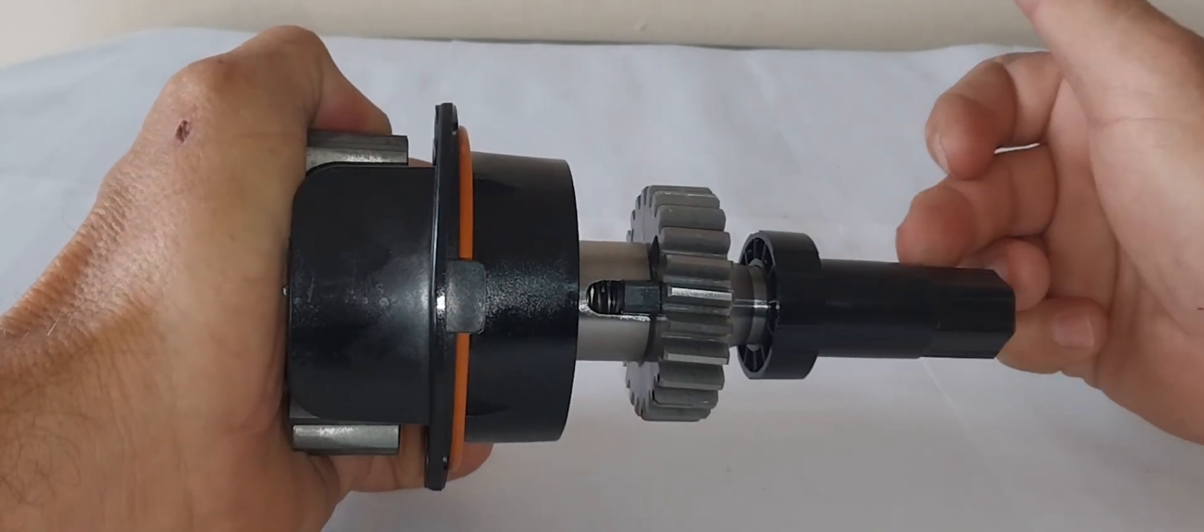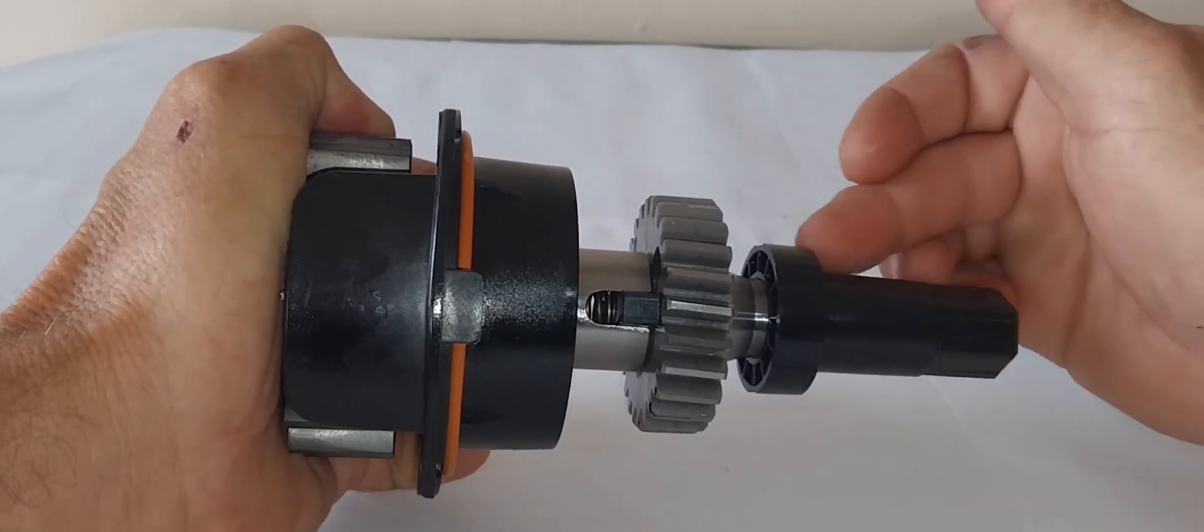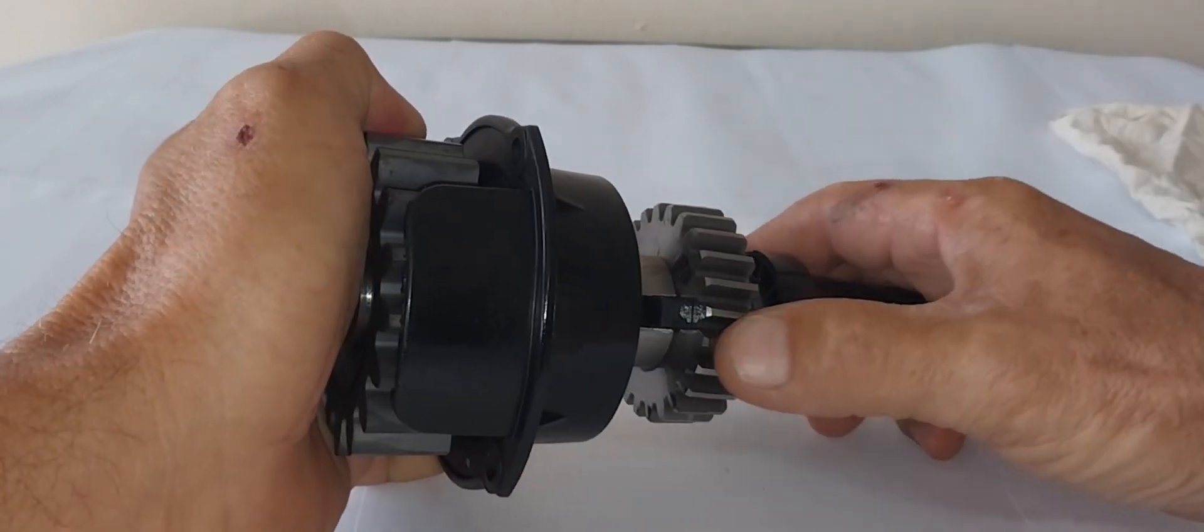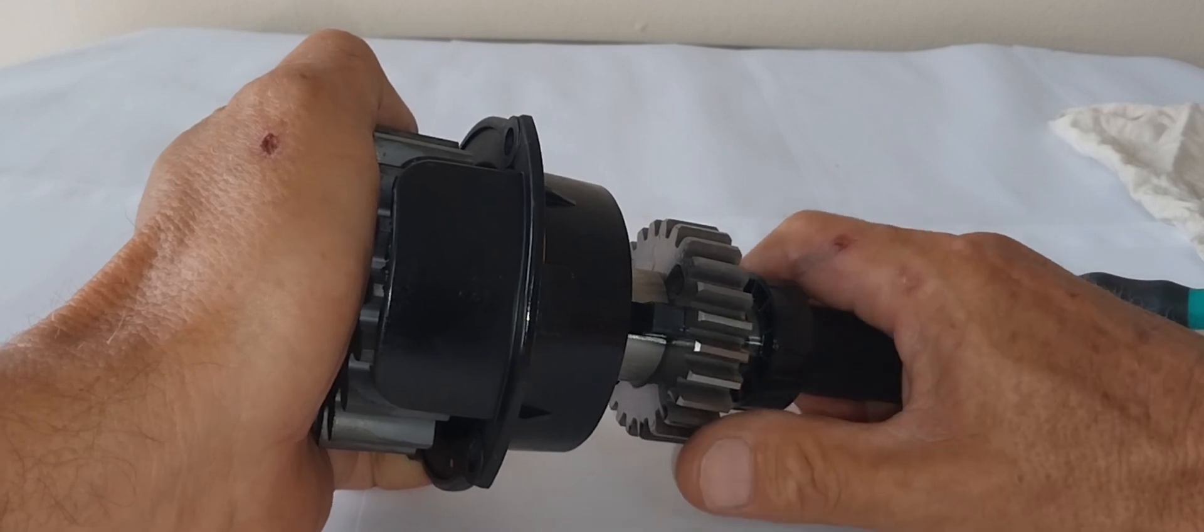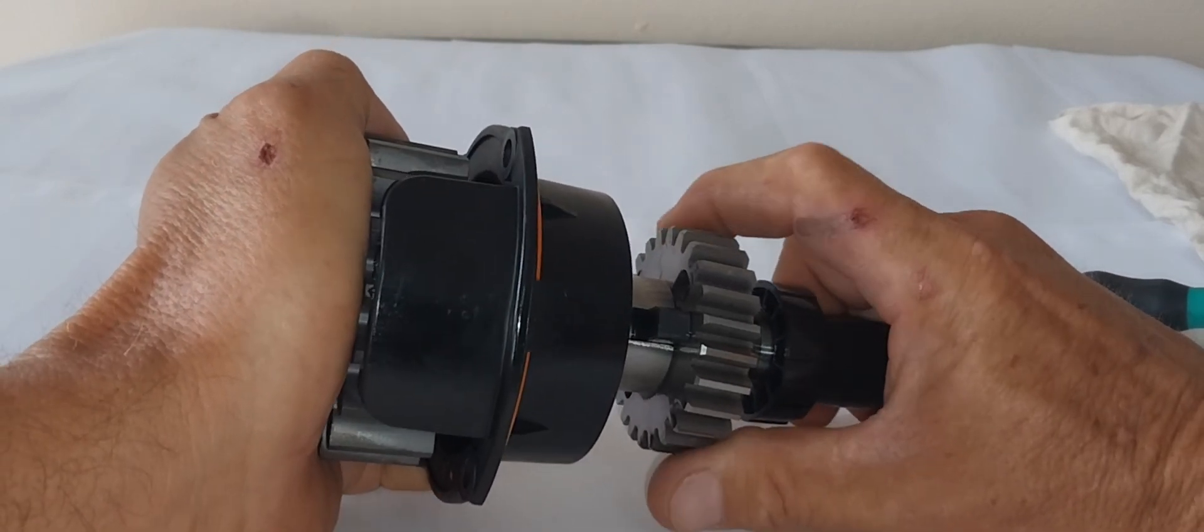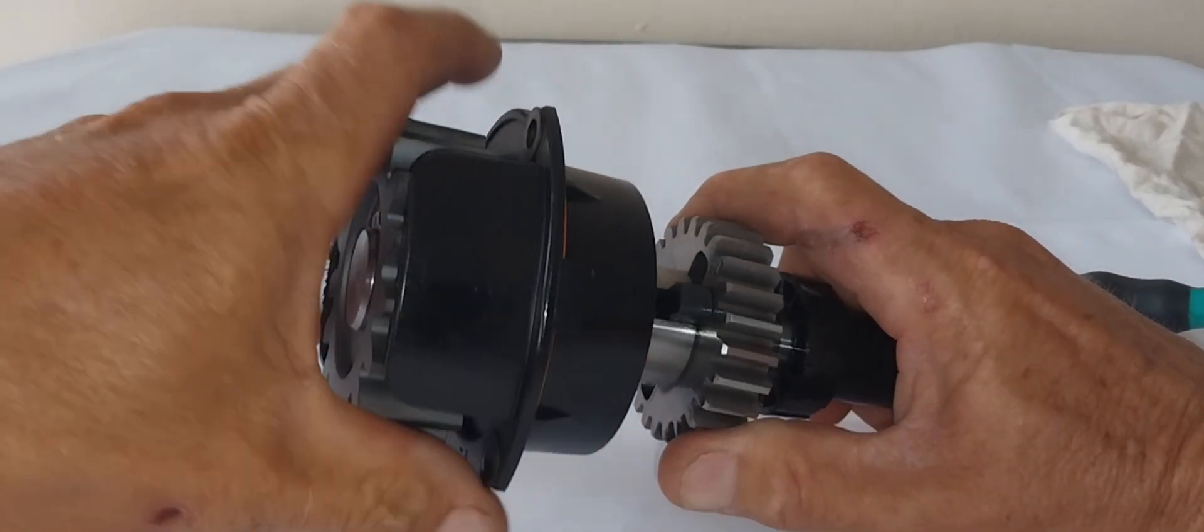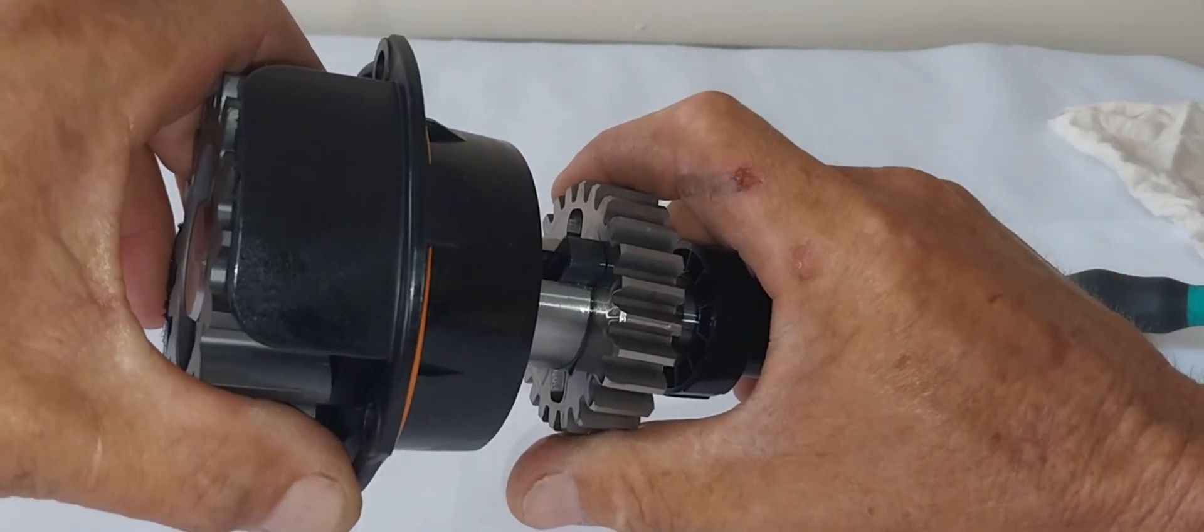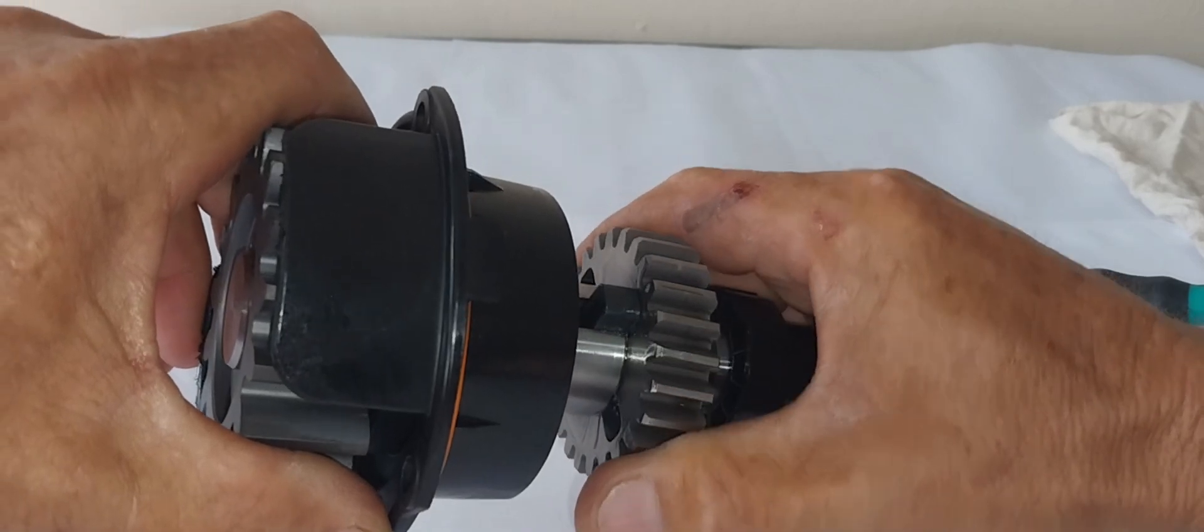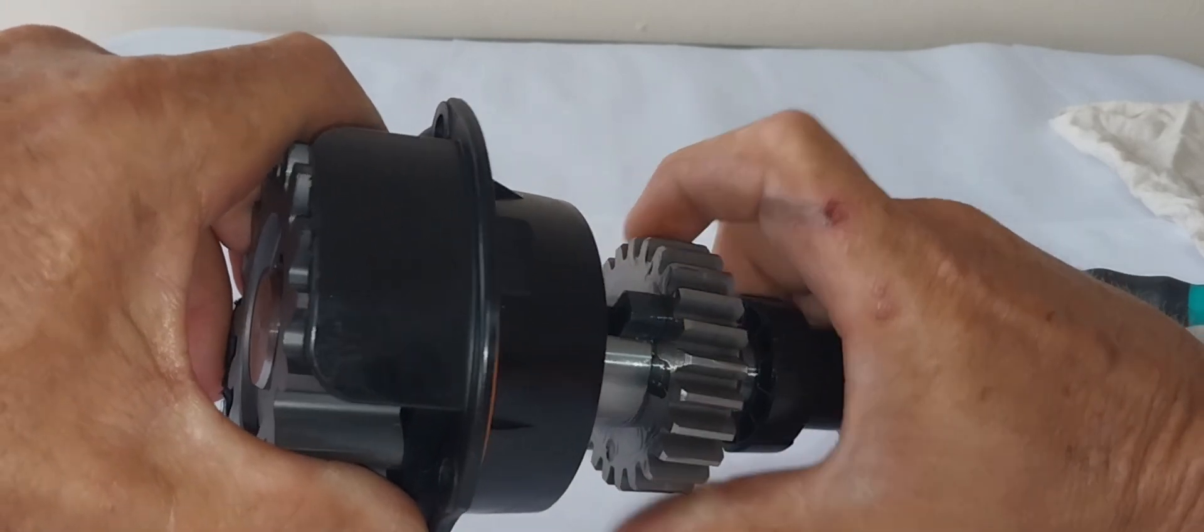But basically when you push it up into the manual position, this pin slides forward, your pin comes out, and then your main gear can rotate. I'm just going to rotate it until it clicks so you can see when it goes into gear.